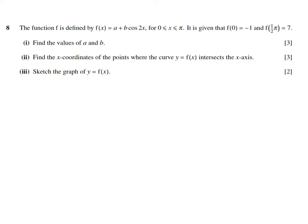The function f is defined by f(x) = a + b·cos(2x), where x is between 0 and π. It is given that when x equals 0, f(x) equals negative 1, and when x equals π/2, f(x) equals 7. Part 1: find the values of a and b. Part 2: find the x-coordinates where the curve y = f(x) intersects the x-axis. Part 3: sketch the graph y = f(x).